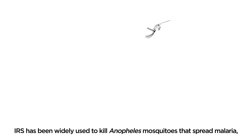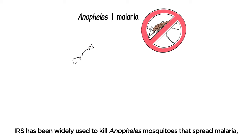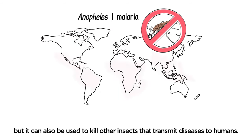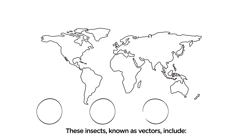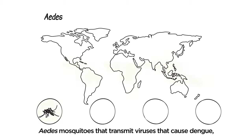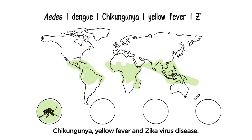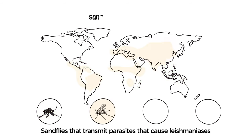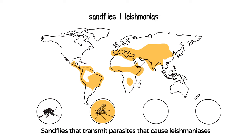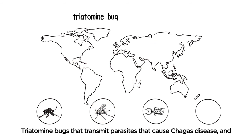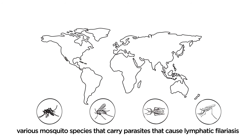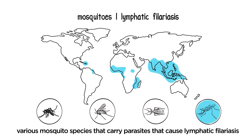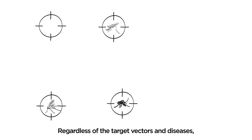IRS has been widely used to kill Anopheles mosquitoes that spread malaria, but it can also be used to kill other insects that transmit diseases to humans. These insects, known as vectors, include Aedes mosquitoes that transmit viruses that cause dengue, chikungunya, yellow fever, and Zika virus disease; sand flies that transmit parasites that cause leishmaniasis; Triatomine bugs that transmit parasites that cause Chagas disease; and various mosquito species that carry parasites that cause lymphatic filariasis.